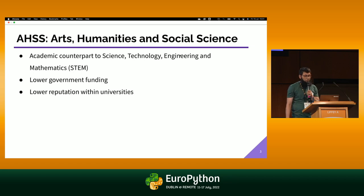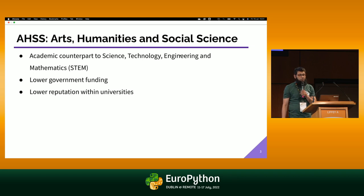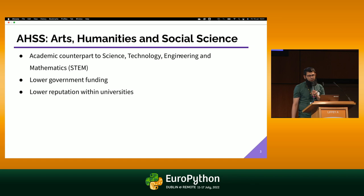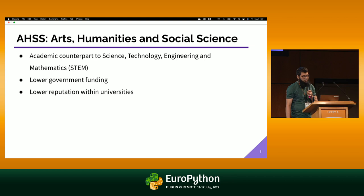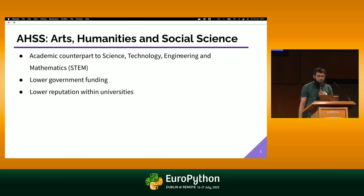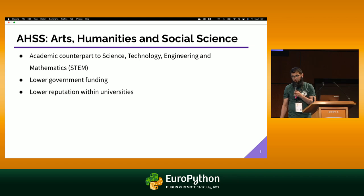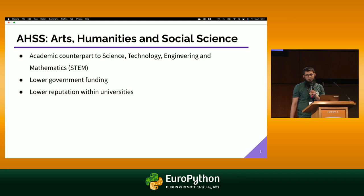If you are even trying to solve a problem from computer science, you're trying to solve a problem that exists outside of computer science mostly. Which is why we see a lot of interdisciplinary roles within computer science as well. One of the challenges when it comes to arts, humanities, and social sciences is that lower attention has been given to this because there has been a drive towards STEM more often. However, the problems are now coming from AHSS more often than before.